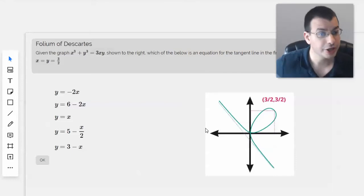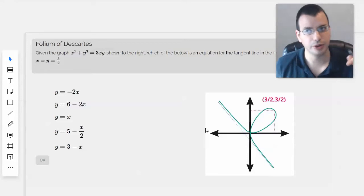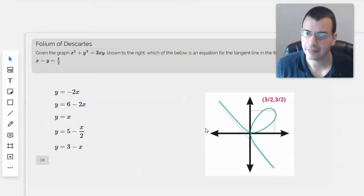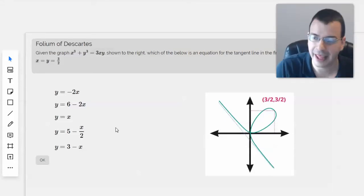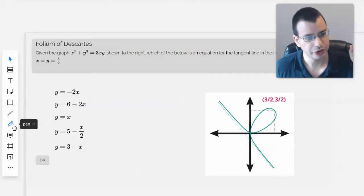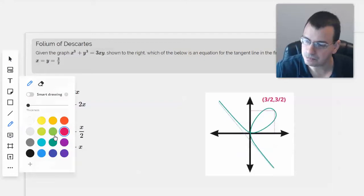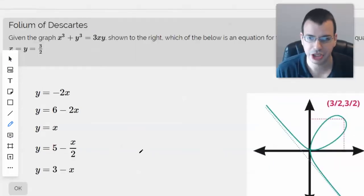OK, so the idea with tangent line is you find the slope, take your one point, which is a coordinate pair, and you plug it into y minus y1 equals m times x minus x1. So start by finding the slope.